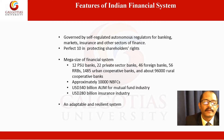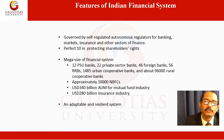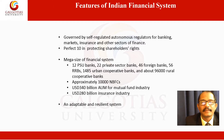India has got a perfect 10 score in protecting shareholders' rights. The size of the Indian financial system is enormous. There are 12 PSU banks, 22 private sector banks, 46 foreign banks, 56 regional rural banks, 1,485 urban cooperative banks, and 96,000 rural cooperative banks. There are approximately 10,000 non-banking financial companies. The total assets under management of the Indian mutual fund industry is approximately US$340 billion, and the Indian insurance industry is of US$280 billion size. This is a very large financial system, as required for a country with such a large population.